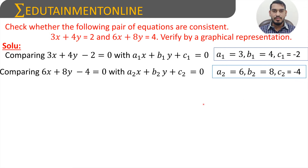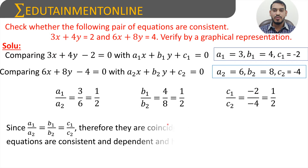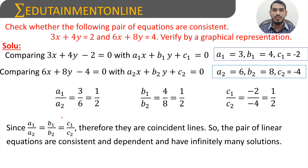Now taking the ratios of coefficients: a1 by a2 is 3 by 6, which equals 1 by 2. b1 by b2 is 4 by 8, which also equals 1 by 2. c1 by c2 is minus 2 by minus 4; the negatives cancel and 2 by 4 equals 1 by 2. Therefore a1 by a2 equals b1 by b2 equals c1 by c2, all equal to 1 by 2.